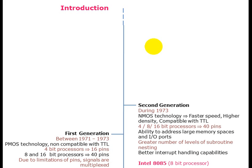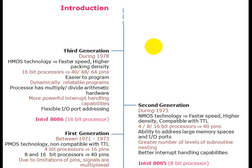The second generation, during 1973, this microprocessor was designed by NMOS technology — now faster speed, higher density, compatible with TTL, 4-bit, 8-bit, 16-bit microprocessors, 40-pin, ability to address larger memory space and IO ports, greater number of subroutine levels, and better interrupt handling capabilities. Intel 8085 is an 8-bit microprocessor.